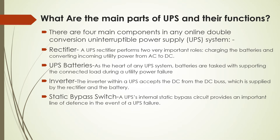What are the main parts of UPS and their functions? There are four main components in any online double conversion uninterrupted power supply system. First, the Rectifier — it performs two very important roles: charging of the batteries and converting incoming utility power from AC to DC. Second, UPS Batteries — as the heart of any UPS system, batteries are tasked with supporting the connected load during utility power failure. Third, the Inverter — it accepts DC from the DC bus supplied by the rectifier and converts it to AC power supply. Fourth, the Static Bypass Switch — a UPS internal static bypass circuit provides an important line of defense in the event of UPS failure.